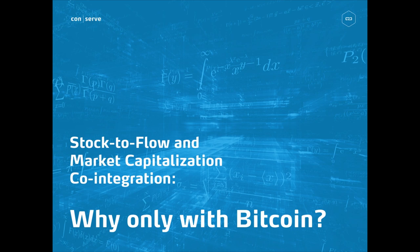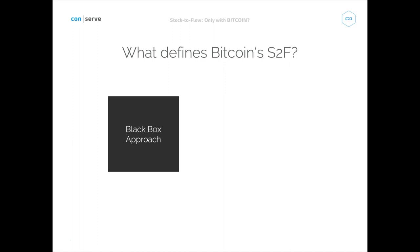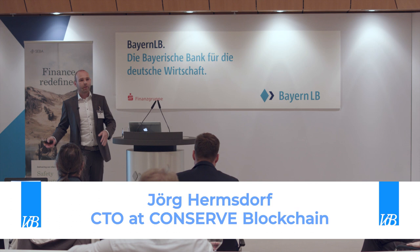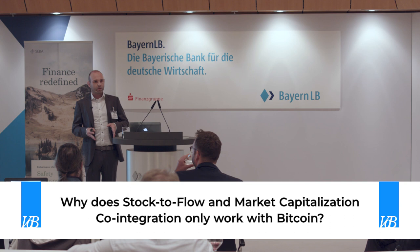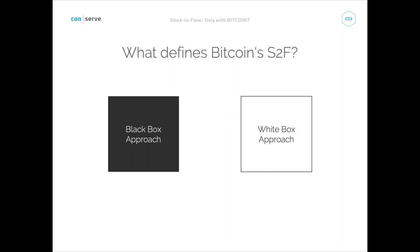The question is what defines Bitcoin's stock-to-flow. Manuel did the black box approach — treating Bitcoin like a black box and only looking at the output to the Bitcoin blockchain. You need a full node; you can get all the data from the Bitcoin network on your own full node and look at what comes out: the blockchain. Another approach in engineering or reverse engineering is the white box approach, where you look at the inside of the engine.